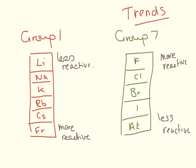Whereas in group 7, it's the other way around. The least reactive ones at the bottom, and the more reactive ones at the top.